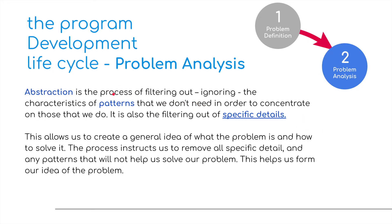So what is abstraction? Let's have a little bit of a recap. Abstraction is a process of filtering out and ignoring the characteristics or patterns that we don't need, in order to concentrate on those that we do. It is also the filtering out of specific details. This allows us to create a general idea of what the program is and how to solve it. The process instructs us to remove all specific detail and any patterns that will not help us solve our problem, which helps us form our idea of the problem.